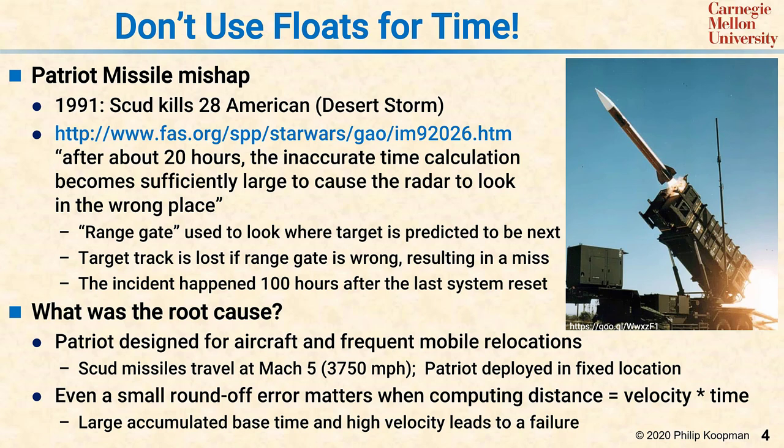The takeaway is even a very small round-off error if you iterate across it, so time was going 0.1, 0.2, 0.3, and so on, and after 100 hours, time was sufficiently far off from the floating point compared to the integer tenths of a second, that a distance computation based on velocity times time came up with the wrong answer, and when they shot at the ballistic missile, they missed. The moral of this story is do not ever use 32-bit floating point to represent time. It will eventually come back to bite you.